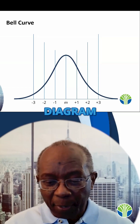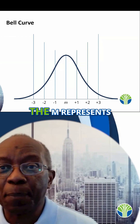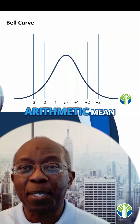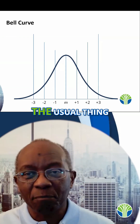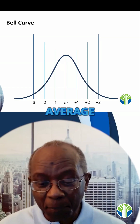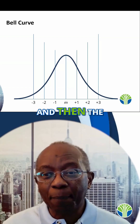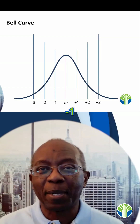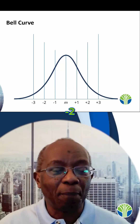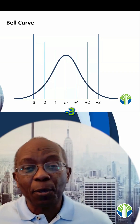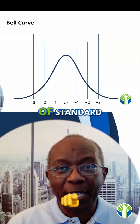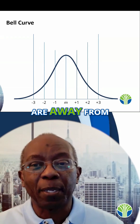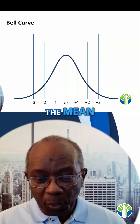And in our diagram, the M represents the mean — that is the arithmetic mean, the usual thing people mean by the average. And then the numbers, plus 1, plus 2, plus 3, minus 1, minus 2, minus 3 — those represent the number of standard deviations you are away from the mean.